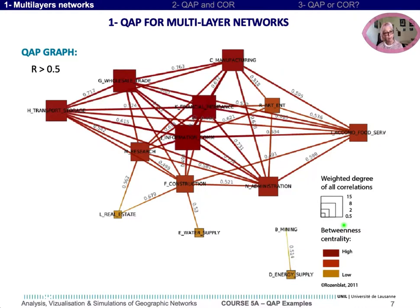Here, two activity networks are very central: the financial and insurance sector, and information and communication. All the other activity networks are distributed — directly or indirectly — similarly to these two sectors because, by their nature, these two activities contribute to building and maintaining all the other networks. This means that the city networks of the two central activities sustain the networks of the other activities.